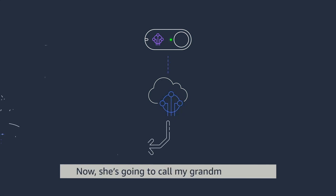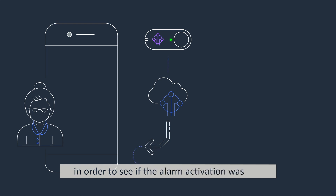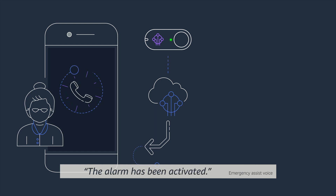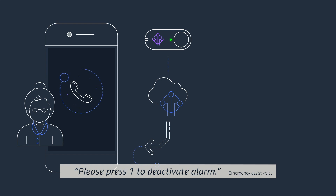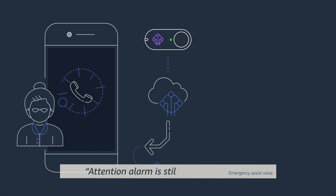Now it's going to call my grandma's phone in order to see if the alarm activation was real or if it was just a mistake. The system announces: 'The alarm has been activated. Please press your password to deactivate the alarm.' If she doesn't press anything or she doesn't pick up the phone, it responds: 'You did not press anything. Attention, alarm is still active.'